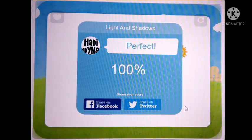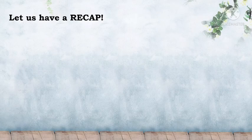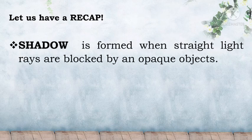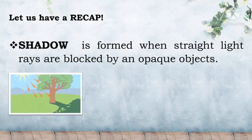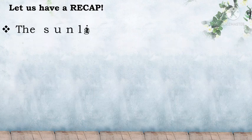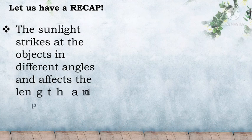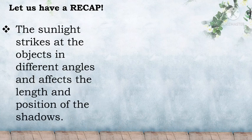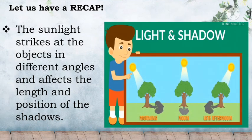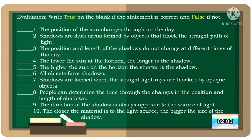Let us have a recap. Shadow is formed when straight light rays are blocked by an opaque object. The sunlight strikes at the objects in different angles and affects the length and position of the shadows. For our evaluation, write true on the blank if the statement is correct and false if not. You have 2 minutes to answer this. Your timer starts now.